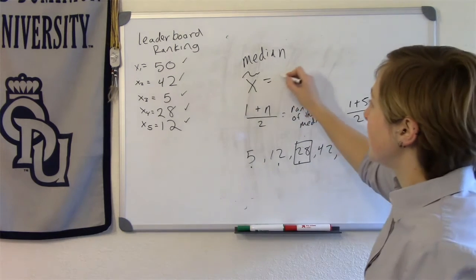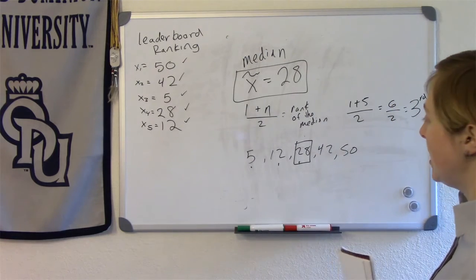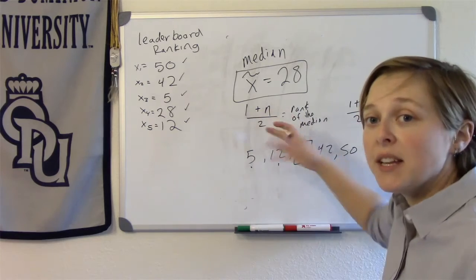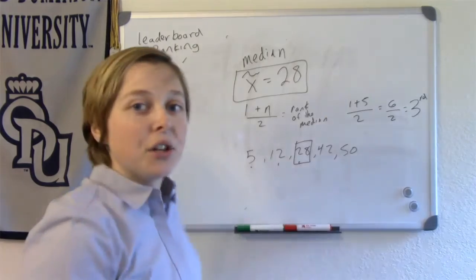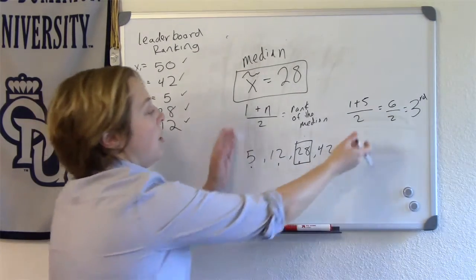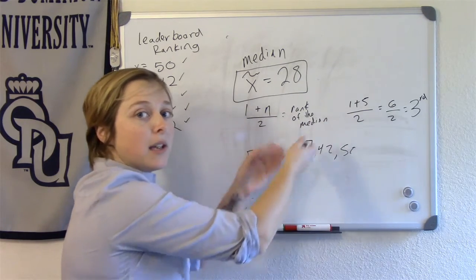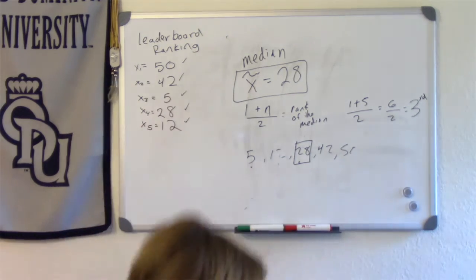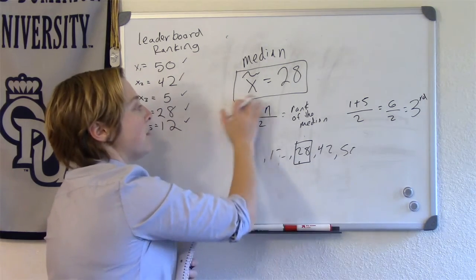So x tilde is 28. Actually, you didn't have to use this formula. It's just a helpful formula if you wanted to use it. Another thing that you could have done is you could have looked at this data and you would go, 1, 2, oh, there's the middle number. So you go outwards, inwards, to find the middle number. It doesn't matter which way you want to do it. When you have larger data sets, this formula can be really helpful.